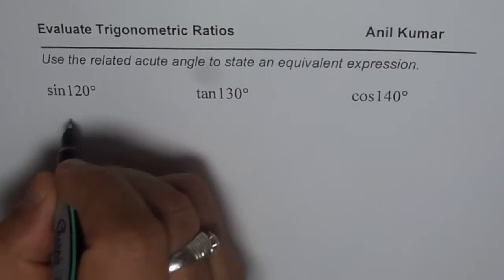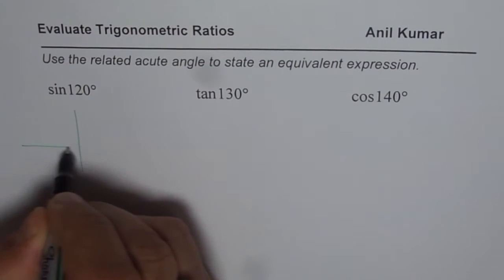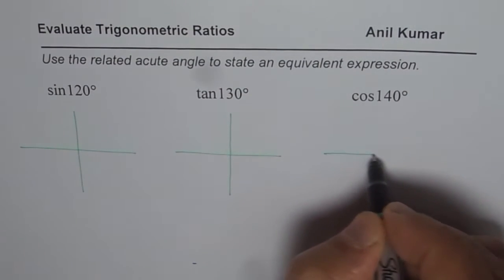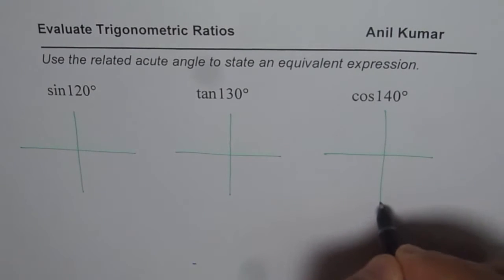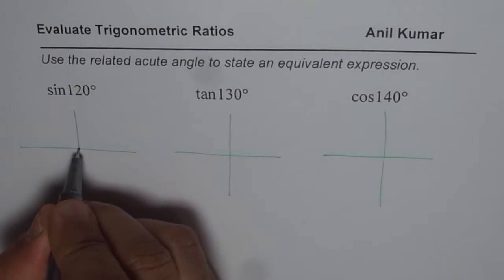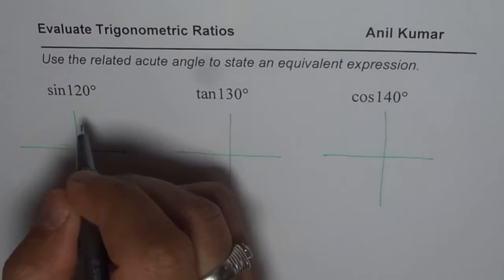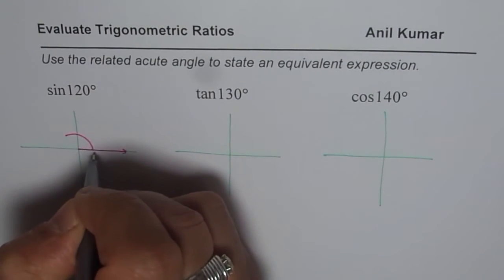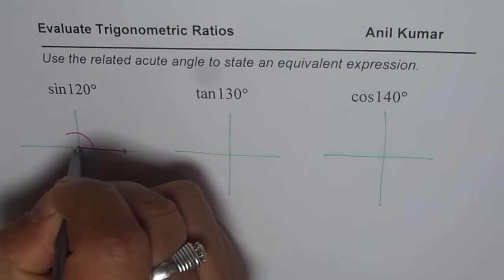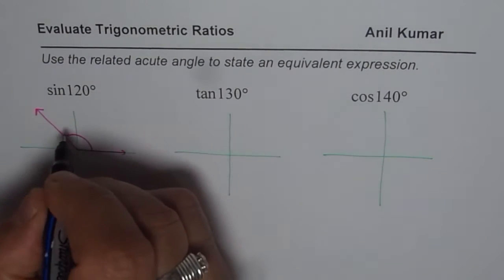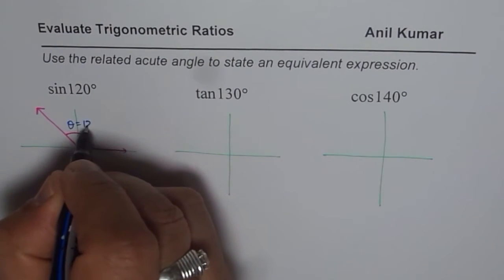What we are going to do here is analyze the situation with reference to the CAST rule and acute angle. When I say sine of 120 degrees, it means that my initial arm is along the positive x-axis and the terminal arm is making an angle of 120 degrees counterclockwise. So theta equals 120 degrees.